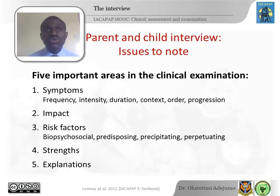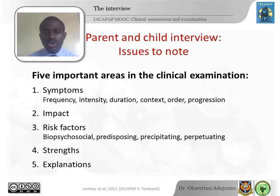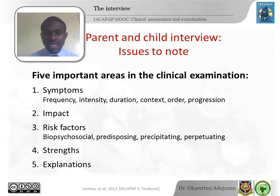What are the risk factors — things that could have led to the current problem? Are these genetic, related to the child's social environment, or related to the child's temperament? Are these things worsening the condition or perpetuating the problem? What are the strengths in the child and their immediate family? And what explanations are you going to give at the end of your assessment?